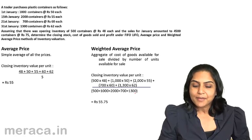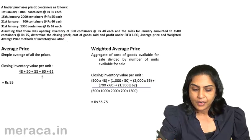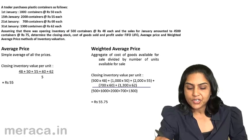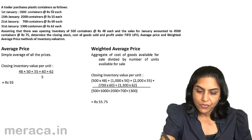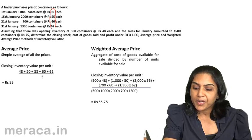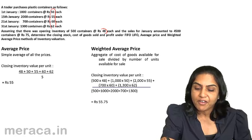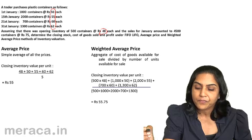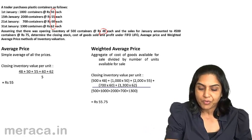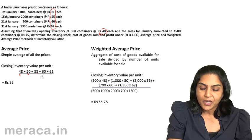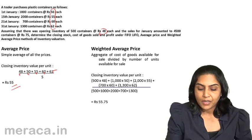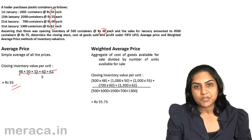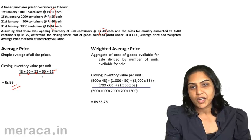Average price is a simple average of all the prices. The closing inventory value would be taken as an average of 50, 55, 60, 62, and the opening inventory of 48. So there are five prices involved. A simple average of these five prices — 48 plus 50 plus 55 plus 60 plus 62 divided by 5 — gives us 55. All issues would be valued at Rs. 55, and the closing inventory would also be valued at 55.